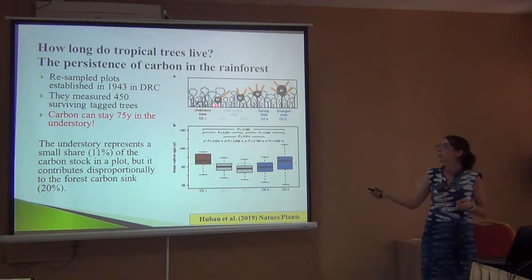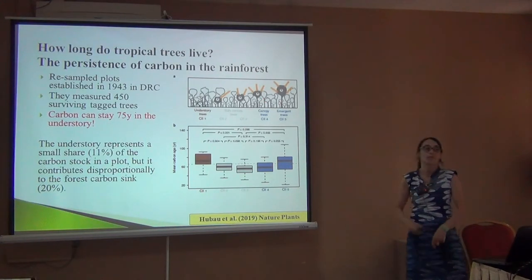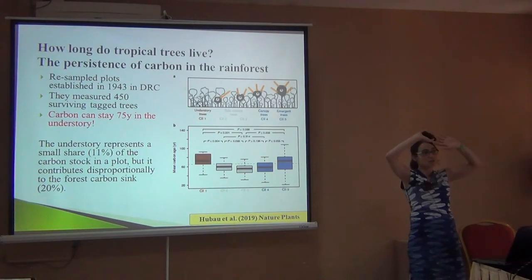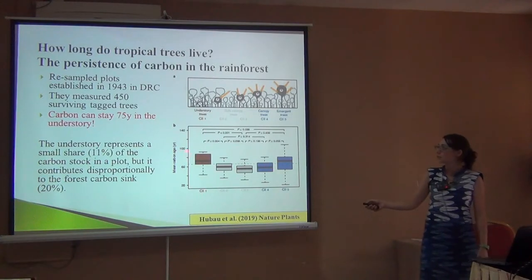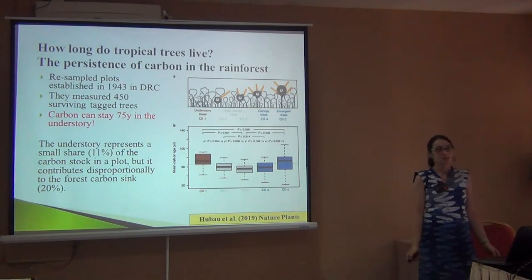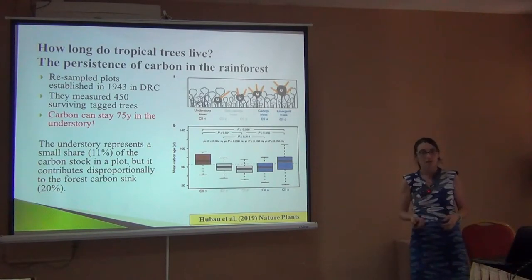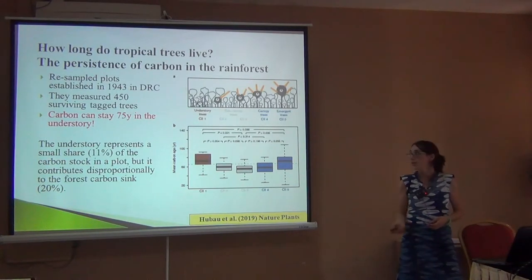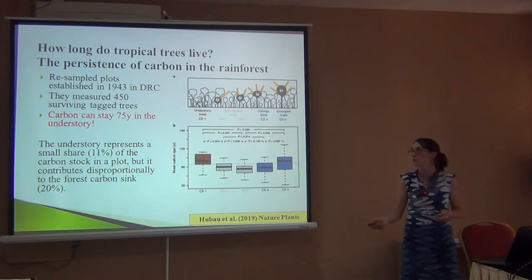The coding system has four groups: understory trees getting little light, trees starting to reach the canopy, canopy trees, and emergents that stand clearly out of the canopy — the biggest trees in the rainforest. It was rather unexpected that understory trees were, on average, as old as canopy trees. Small trees of 10 to 15 centimeters in diameter were estimated to be 75 years old. They hold only 11% of the carbon in the whole plot, but because they maintain that carbon for a very long time, it's very important to consider them in carbon projects. So it's important to preserve these little trees.